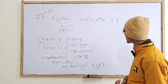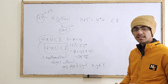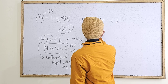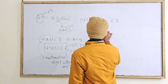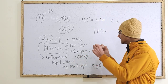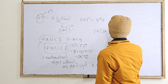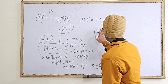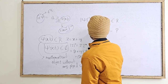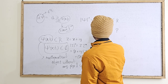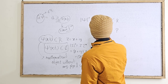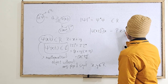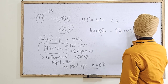Max Born gave the interpretation — Born's statistical interpretation. He says: you square the modulus of the wave function and multiply it by dx, a certain length interval, and this gives the probability of finding the particle. Precisely, |ψ(x,t)|² dx is the probability of finding the particle between x and x + dx at time t.